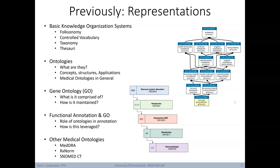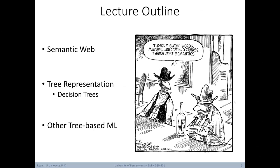Our last class was focused on different knowledge representation strategies, including an array of basic knowledge organization systems, ontologies, the gene ontology, functional annotation with GO, and popular medical ontologies. In today's lecture we'll start by covering semantic webs, then trees as a knowledge representation strategy, and how tree representations can be used in machine learning as decision trees. We'll end by expanding to other tree-based machine learning approaches.